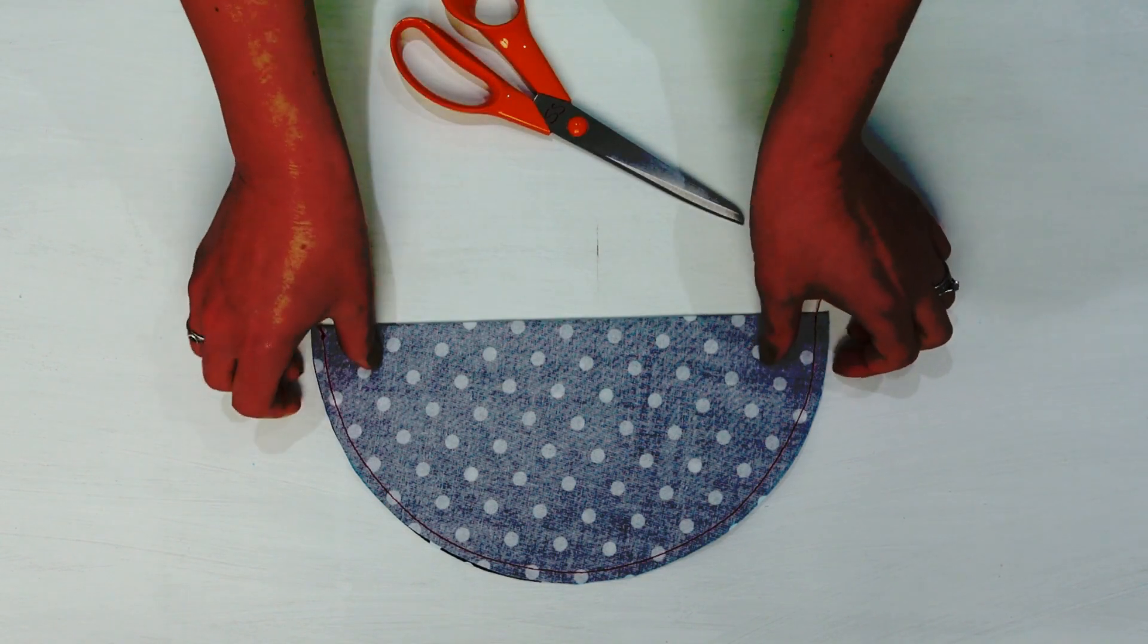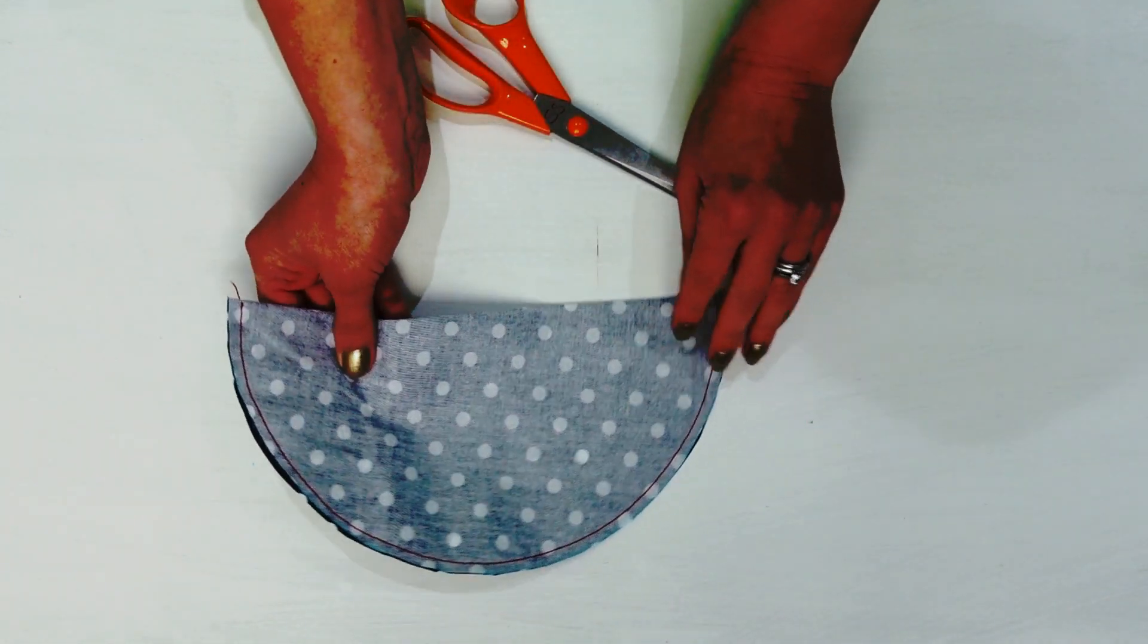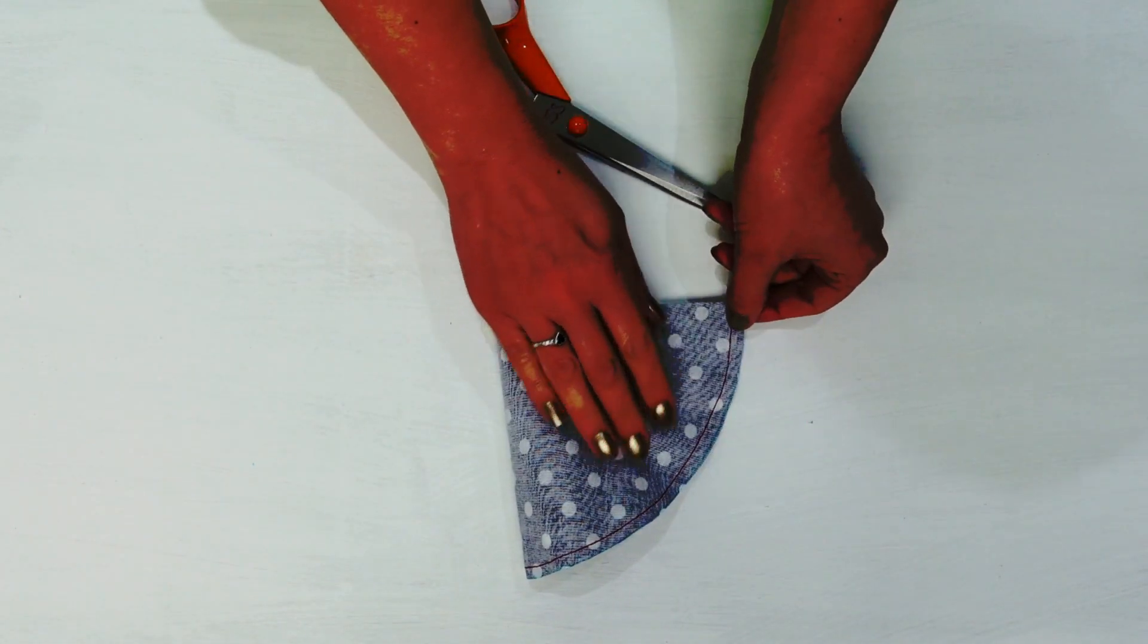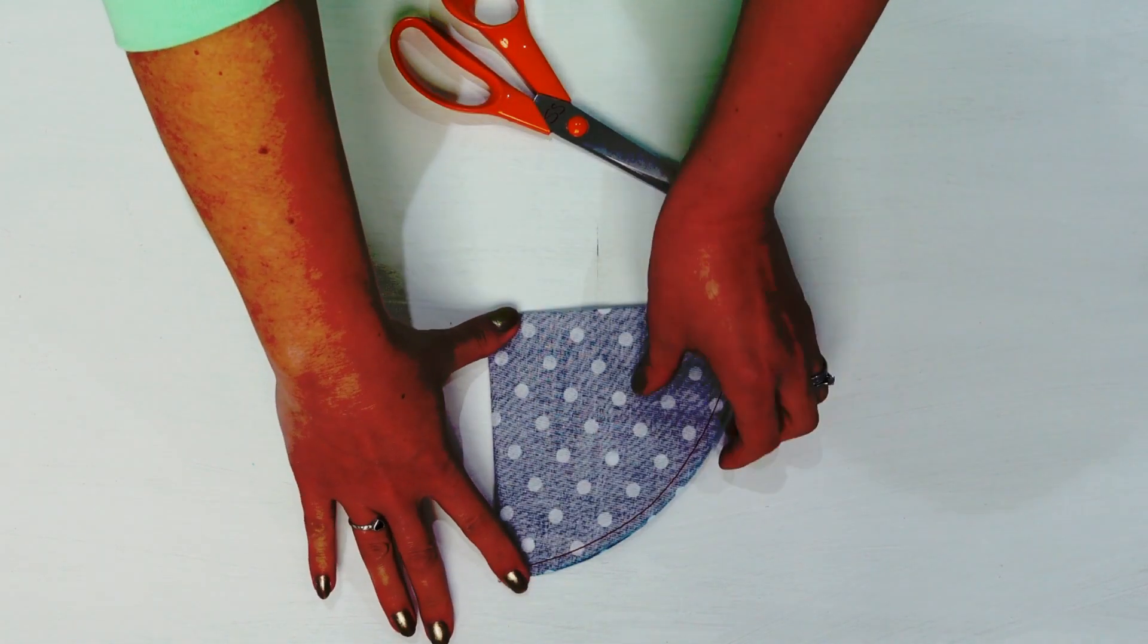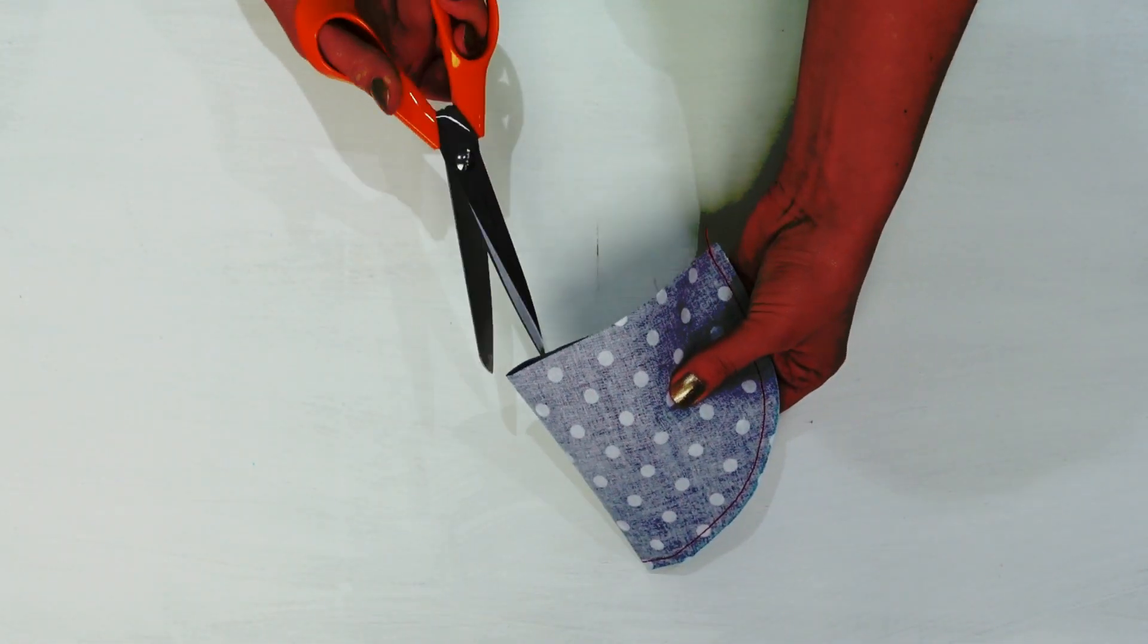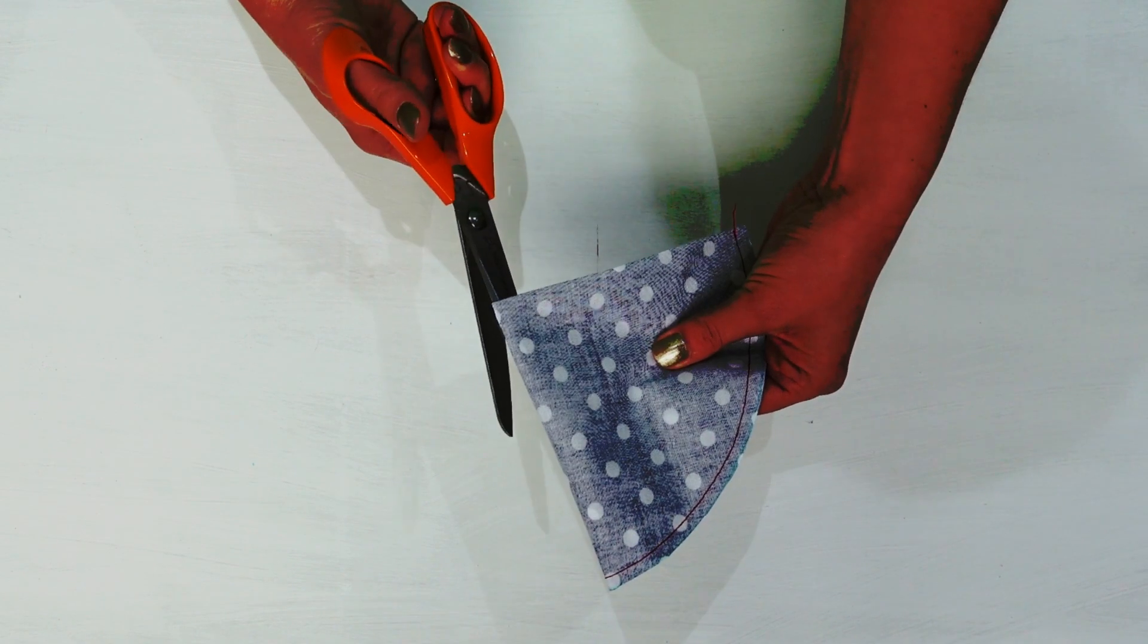Next grab your scissors and then fold your semicircle in half. Then cut along the fold to create two separate pieces.